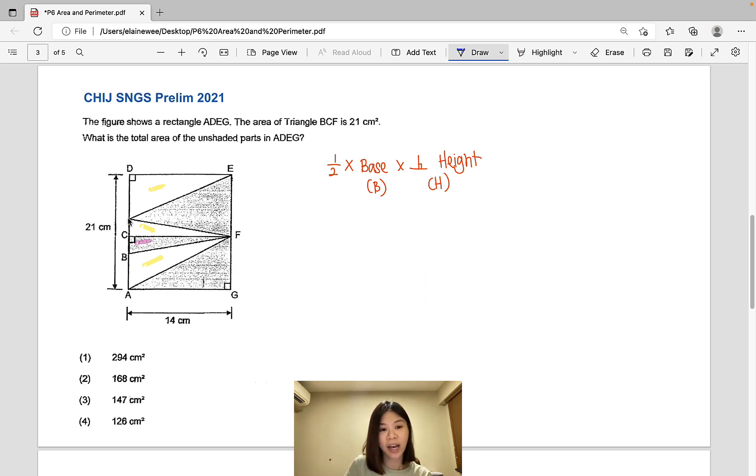Again, since they share a combined length of 21 cm, that makes the base 21. So half times base times the perpendicular height of 14 cm. So doing some simple cancellation, the answer here is 147 cm square. So 147 minus 21, and that gives us 126 square centimeters.